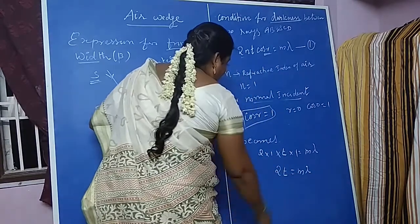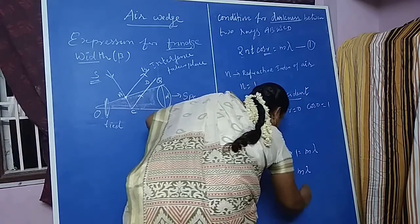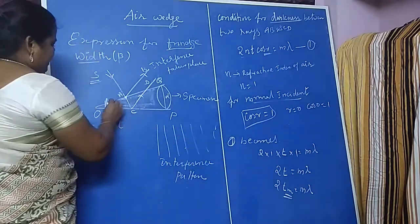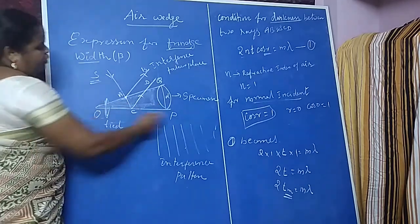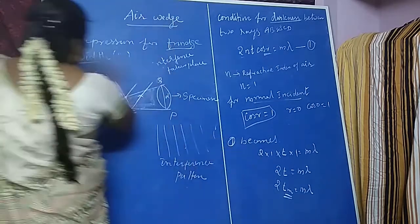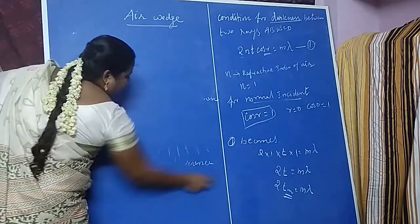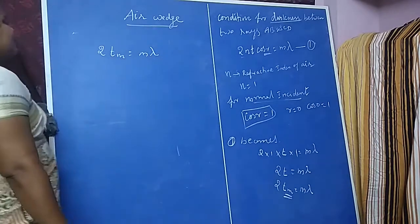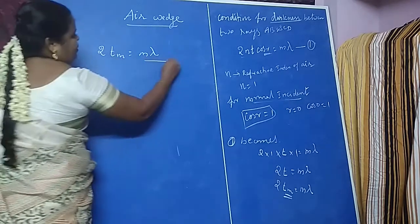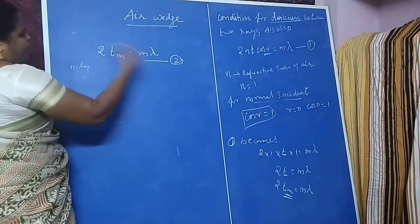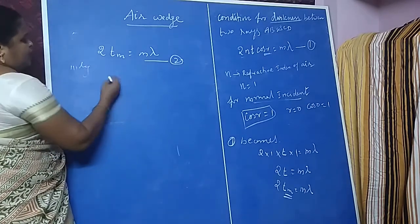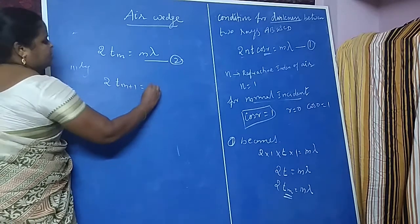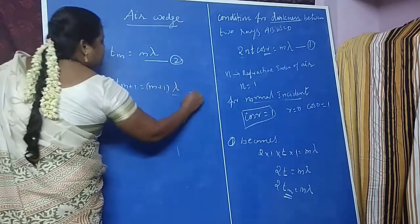Instead of T, we write T_M, where T_M is the thickness of the air film at the Mth dark fringe. The air film thickness goes on increasing from O to P. So we can write 2T_M equal to M lambda — this is equation number 2. Similarly, for the next dark fringe, the thickness is T_(M+1), and we can write 2T_(M+1) equal to (M+1) lambda — this is equation number 3.